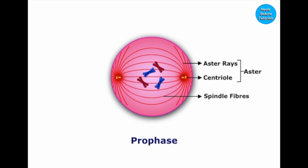As two asters are formed, one at each pole, the division is known as amphiastral. In plant cells, as there is no centrosome, no aster formation takes place, so in plant cells it is known as anastral.